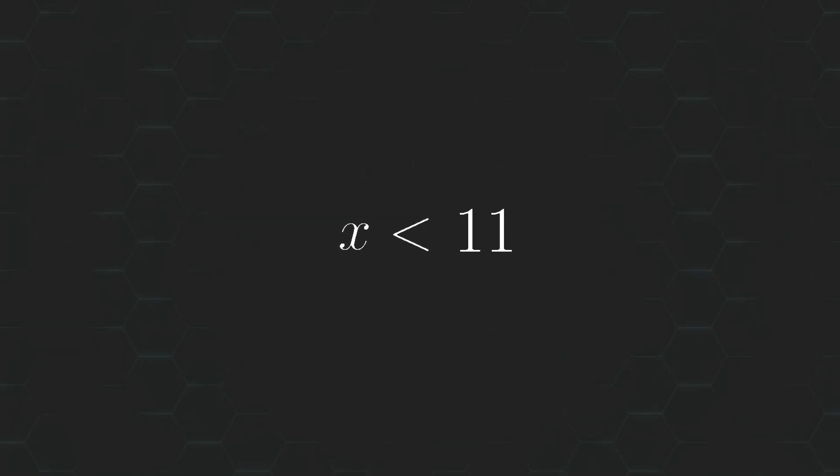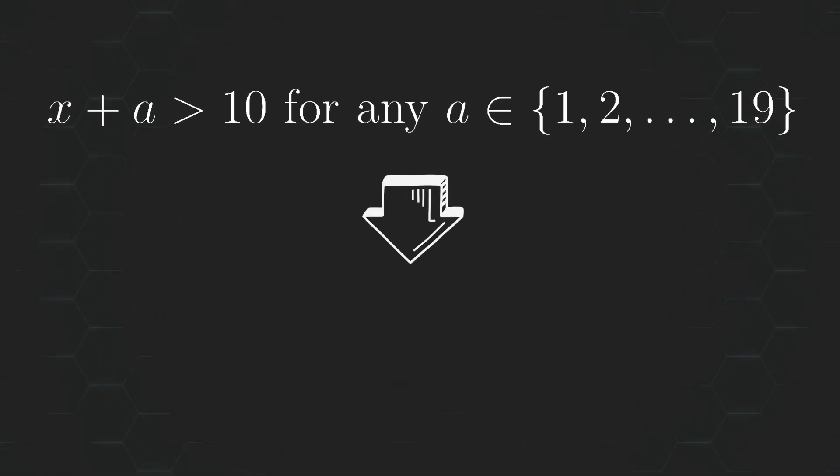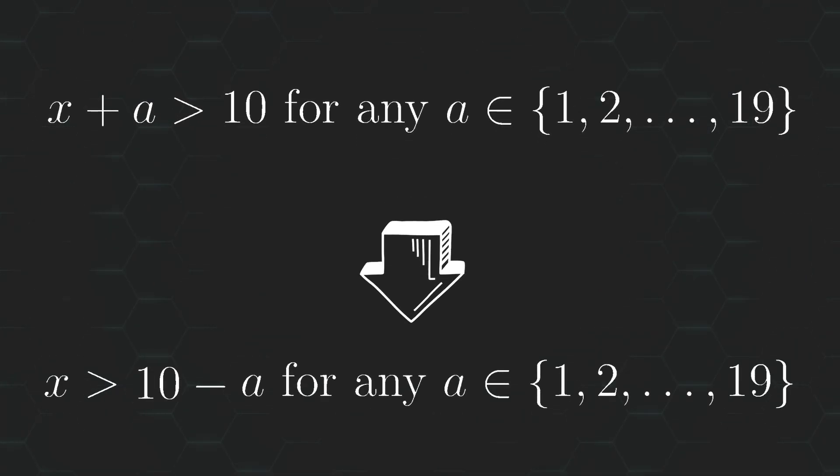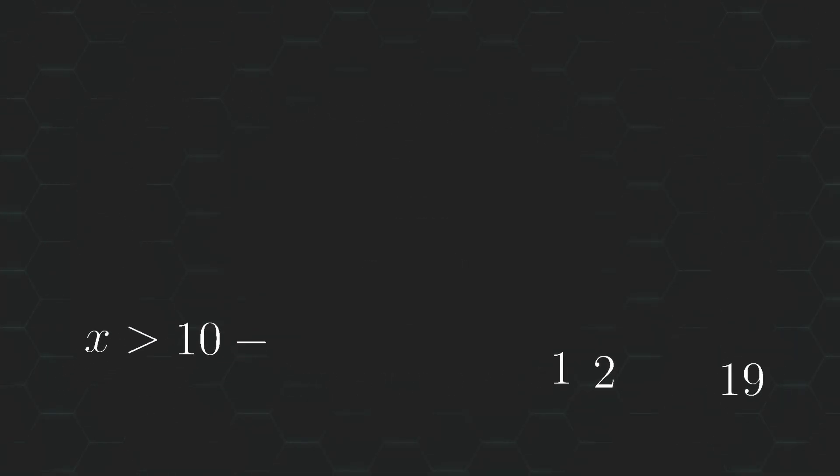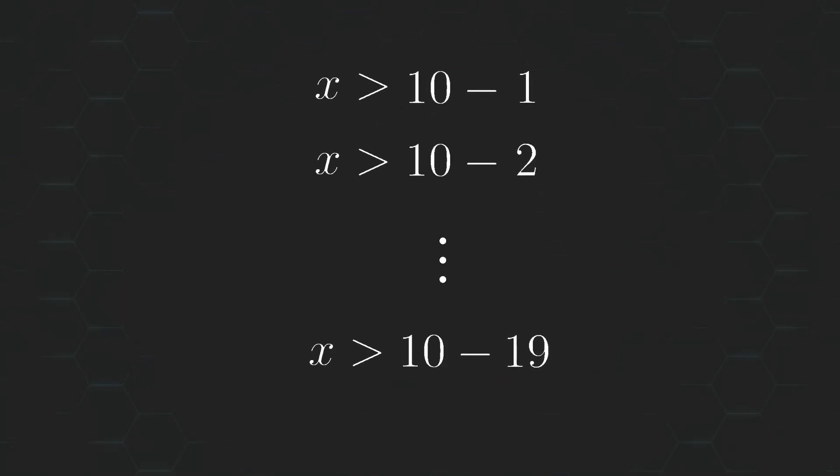Alright, now we're getting somewhere. We can do the same thing with the second condition, which ends up implying that the central number must be greater than 10 minus any other number from our set. So it must be greater than 10 minus 1, 10 minus 2, all the way down to 10 minus 19. And this again simplifies, and tells us that the central number must be greater than 9.